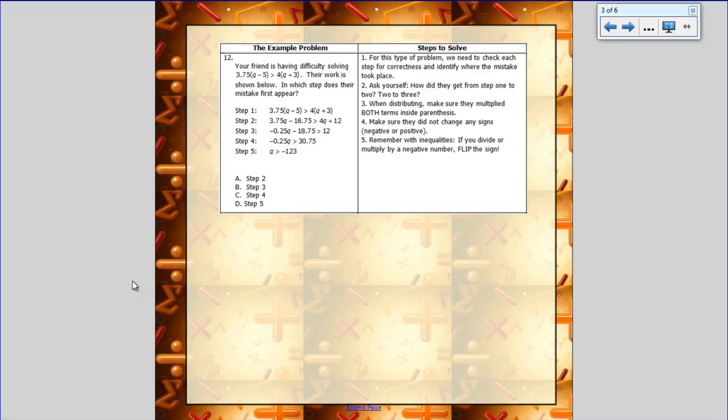So basically, we're going to work this problem. So here it is, we have 3.75 times the quantity of Q minus 5 is greater than 4 times the quantity of Q plus 3. Step number 1, I've got to get rid of those parentheses, so I'm going to distribute. I have 3.75Q minus 18.75 is greater than—and then I have to do this 4 times both of these, so I get 4Q plus 12.